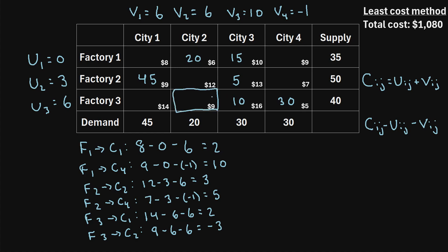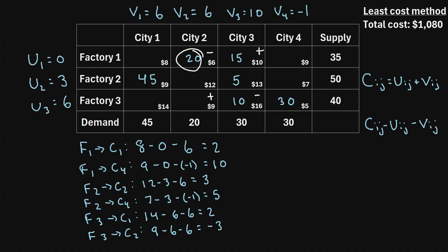We draw a closed loop starting at factory 3 to city 2, touching only allocated cells. We draw alternating plus and minus signs: plus, minus, plus, minus. Focusing on the cells with a minus sign, the values are 20 and 10, and the smaller is 10. We subtract 10 from the cells with a minus sign, so one becomes 0 and the other becomes 10. We add 10 to the cells with a plus sign, so one becomes 25 and the other goes from 0 to 10. These are our updated values.